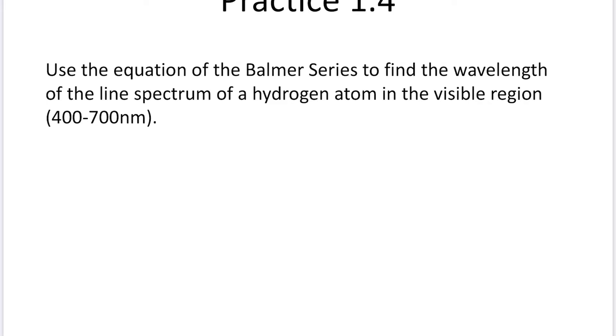Balmer series is expressed as 1 over lambda, where lambda is the wavelength of light, equals R times 1 over 2 squared minus 1 over n squared. And R is 1.097 times 10 to the 7 per meter.